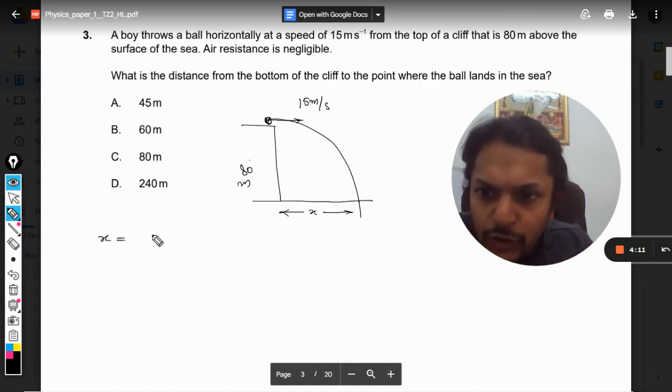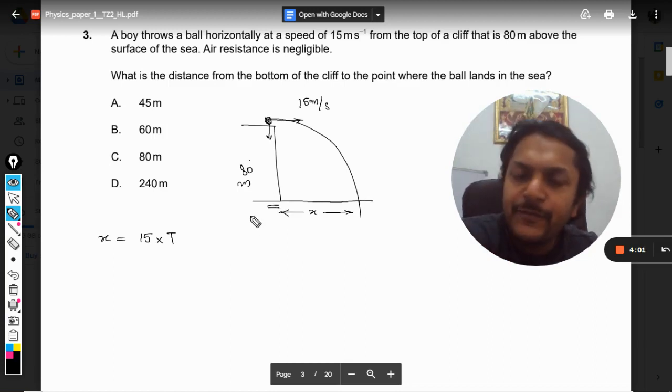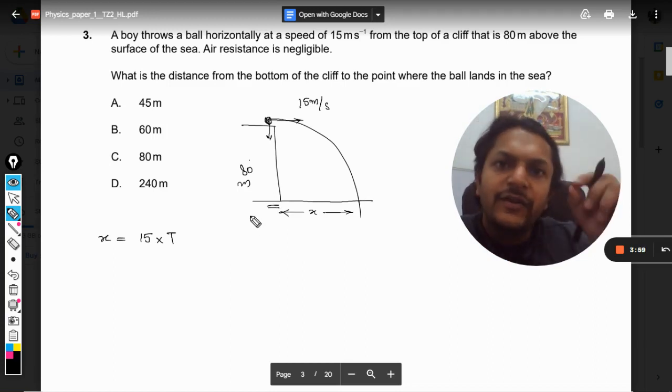For that, we would be considering only the vertical motion, and we will apply s = ut + 1/2 at².